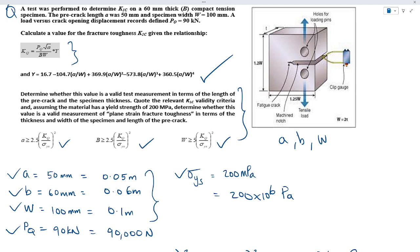The values are shown here, and the Pq is 90 kilonewtons and the sigma yield stress equals 200 megapascals. Now we are supposed to determine the validity of the measurement on a plane strain fracture toughness using all the constraint equations given here.